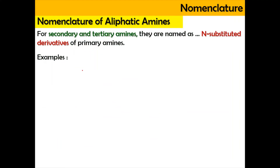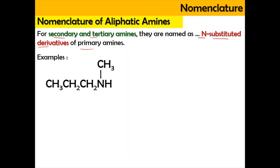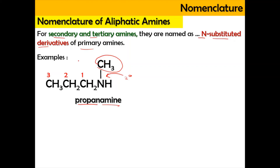Now let's look at naming for secondary and tertiary amines. They are named as N-substituted derivatives of the primary amine. For this example, we find the longest carbon chain: one, two, and three — so the three carbons refer to propanamine. The methyl group is attached to the nitrogen, making it a secondary amine. When it is a secondary amine, the substituent is prefixed with the letter N. So the name is going to be N-methylpropanamine.